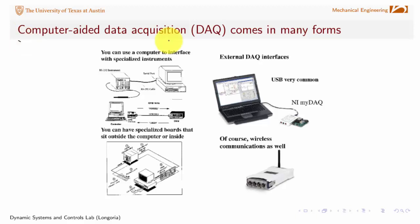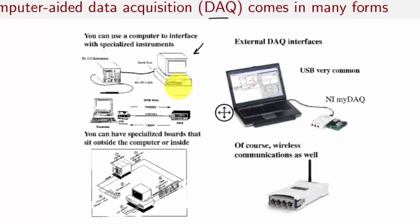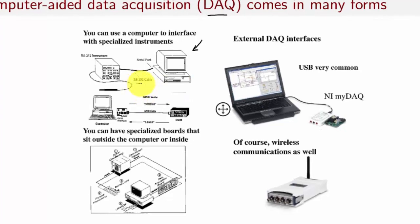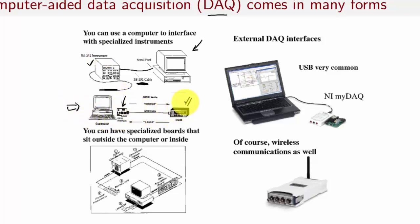Computer-aided data acquisition, which we will refer to as DAQ, comes in many different forms. You can have a computer that communicates over different types of cables — say RS-232 in older form — but there are many different types of serial or parallel communications for controlling external instruments. It may be hard to see in this figure, but it shows a computer with a board that can communicate with a digital multimeter, so you can control dedicated instruments. LabVIEW could be running on the computer, controlling the interfacing with that instrument.